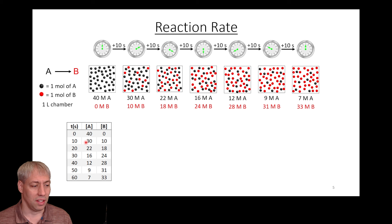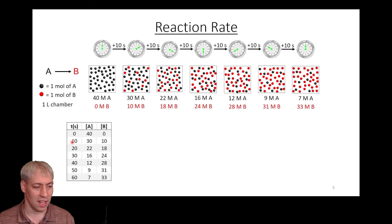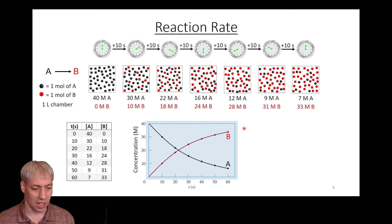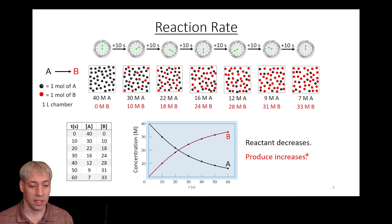We can tabulate this data. At time zero there are 40 A's and 0 B's; at 10 seconds, 30 A's and 10 B's; at 20 seconds, 22 A's and 18 B's, and so forth. A is decreasing, B is increasing. Graphing this data gives a curve where the x-axis is time and the y-axis is concentration. A starts at 40 and decreases; B starts at 0 and increases. The reactant decreases and the product increases because we only started out with reactant.